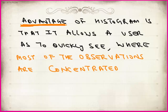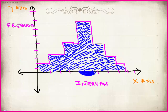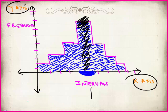The advantage of drawing a histogram is that within seconds, within a click, we can find out where the data is more concentrated. Please prepare this histogram at least once — you should be aware of how we prepare it. On the x-axis, we take class intervals. On the y-axis, we take frequencies. Just by looking, I can easily find out in which interval there is more concentration of the data.